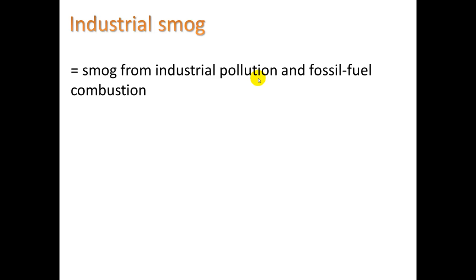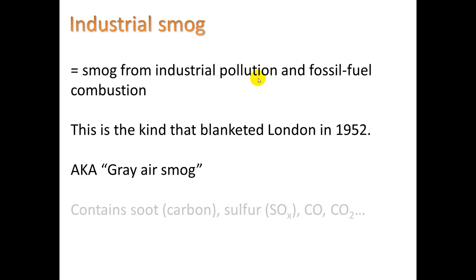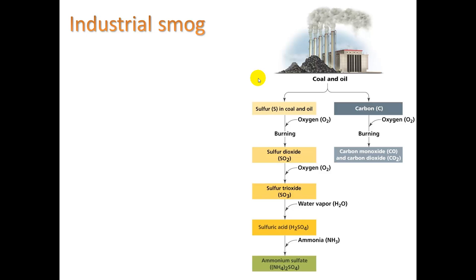Industrial smog is mostly from burning coal. This is the kind that blanketed London in 1952, also known as gray air smog. It contains soot, carbon, sulfur, carbon monoxide, and carbon dioxide — all pretty unpleasant things.